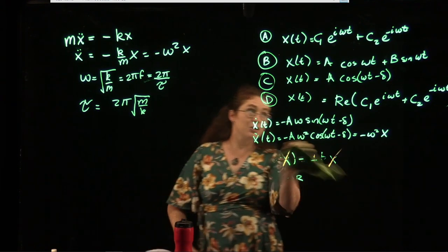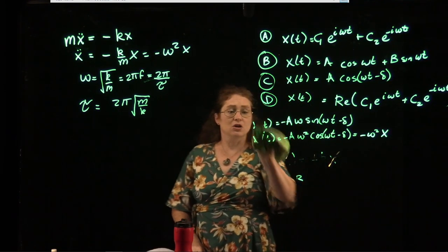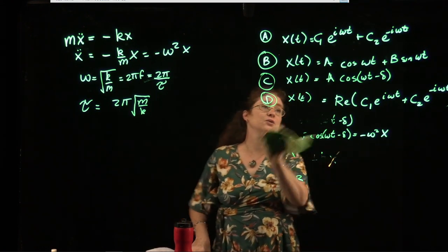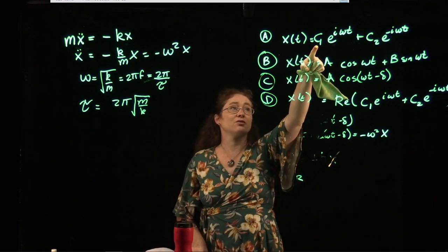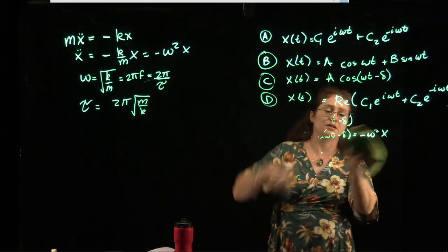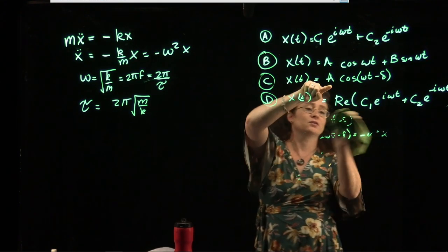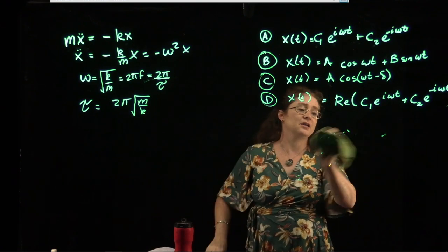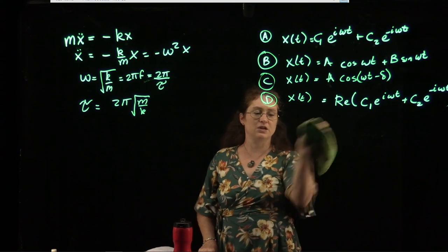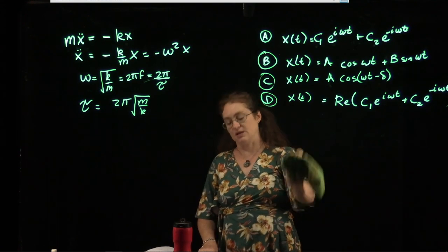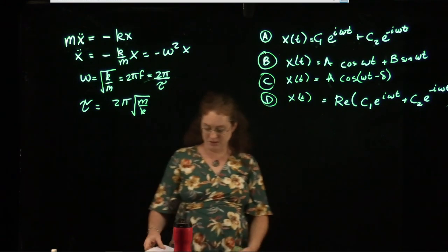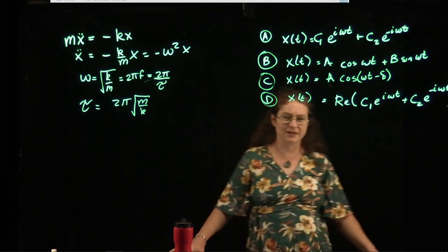There is a lot of algebra to show that each of the solution forms is equivalent. To show they are equivalent, you would have to find a relationship between constants c1 and c2, and the constants a, b, and the phase angle delta. That's a bunch of algebra, and there is a problem in the book that has you do it — I'm not going to do it in the lecture.